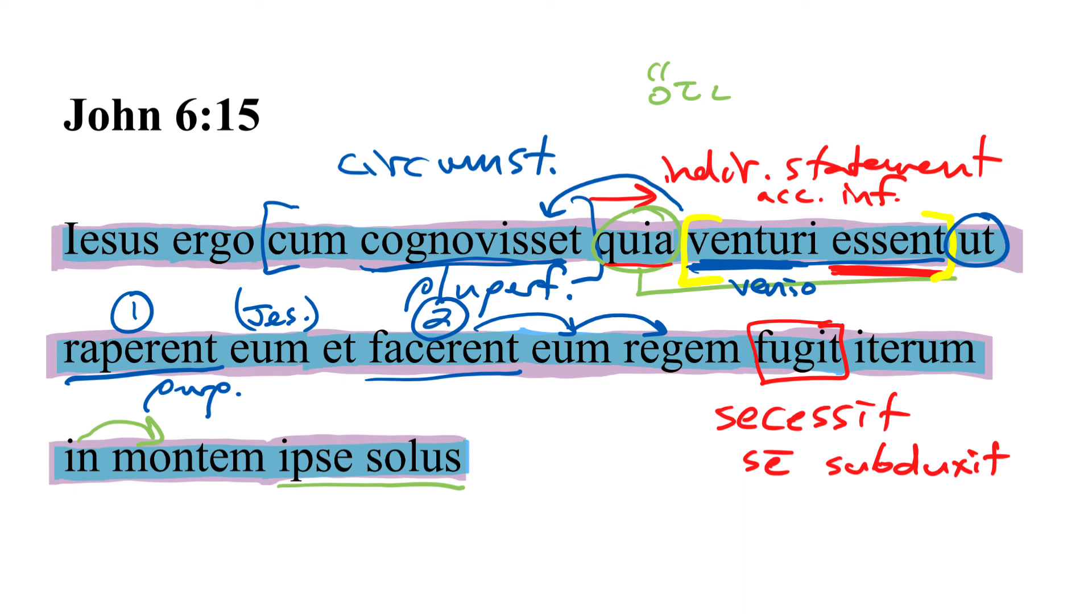So a word about the tenses here, we've talked about how cognovisset is more past than past, venturi essent is indicating something in the future from that more past perspective, and then we've got raperent et facerent in the imperfect subjunctive, both of them, and the imperfect subjunctive in the sequence of tenses indicates something that happens at the same time as or subsequent to, future to, the action of the main verb. So, when he recognized or perceived that they were going to come in order that they might, in the future from the perspective of his perception, seize him and make him king, then, finally, he did something in the indicative, thank goodness, fugit, or, with Erasmus, we might better say, secessit, iterum, in montem ipse solus.